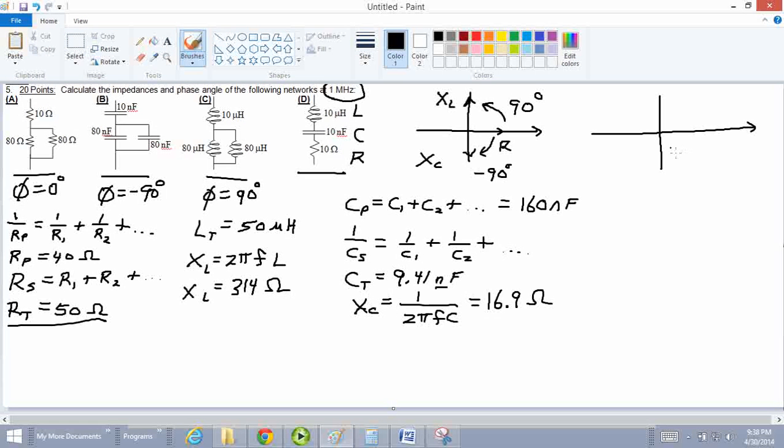Now, in our phaser diagram, this is 16.9, this is 50, and this is 314. So we have a big number here, a small 16.9, and resistance is kind of in the middle. So this is XL. This is XC. This quantity here is XL minus XC. And this would be the impedance.